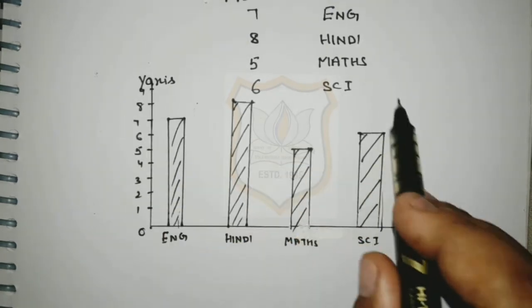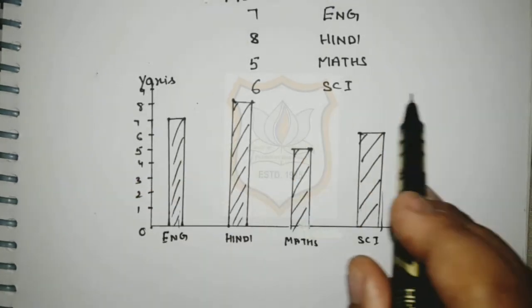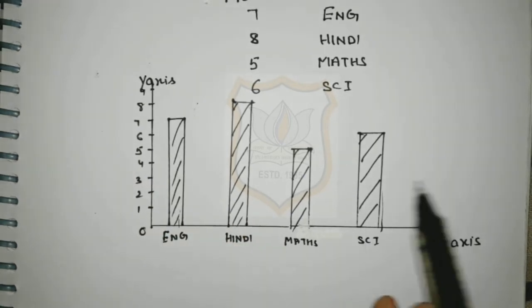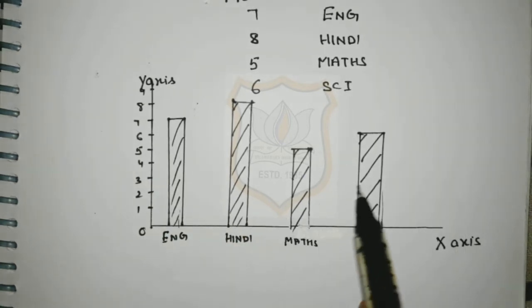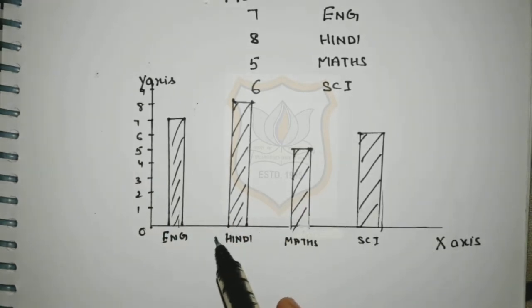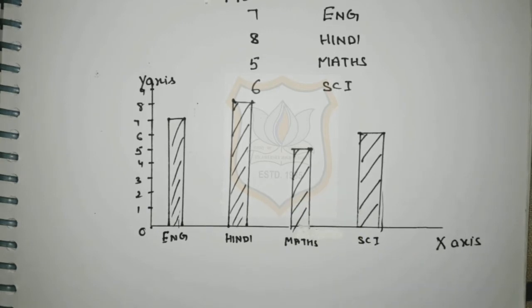So in this way we can draw a bar graph. This is called a bar graph, and by this bar graph we can represent a given data. Now students, you will draw a bar graph.